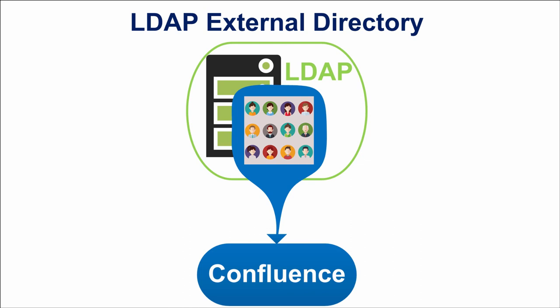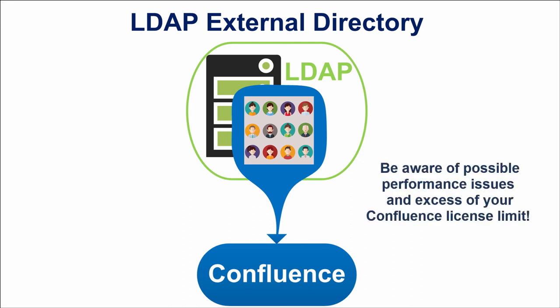So if you have already configured an LDAP directory, you can use it. However, with a large number of users — thousands or tens of thousands — you may encounter performance issues because all operations on user accounts may work slowly. You also need to configure the connection carefully, because not all users from the directory should have access to Confluence; otherwise, you risk exceeding the limit of your Confluence license.